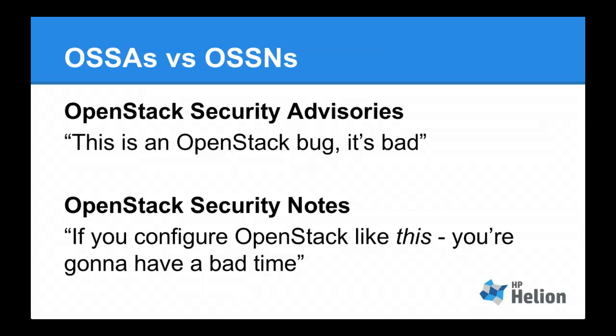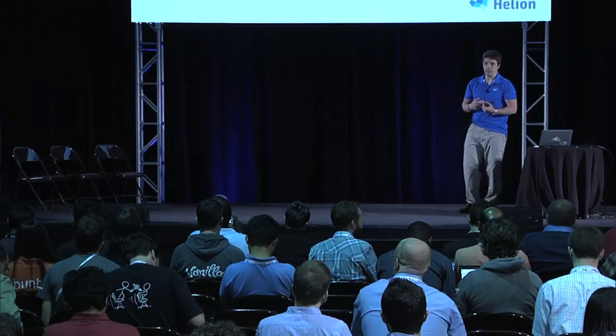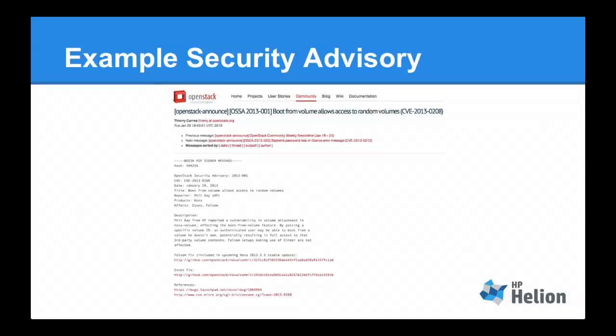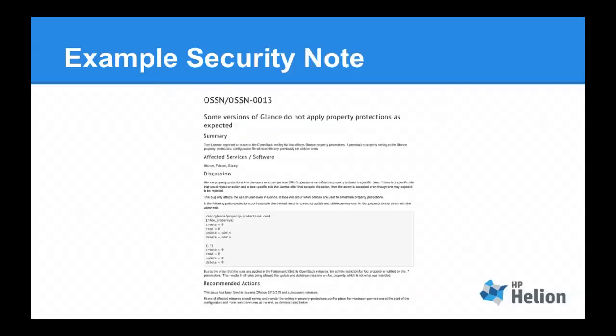The real difference between an OSSA and an OSSN: an advisory is a bug in OpenStack that's going to create a security issue for you. A security note basically means that if you configure it in a certain way, use a technology naively, or deploy it in a certain way, you're going to have a bad time. Security advisories are published to the mailing lists, and security notes in a very similar format are published more widely, including a wiki page that lists all of them.